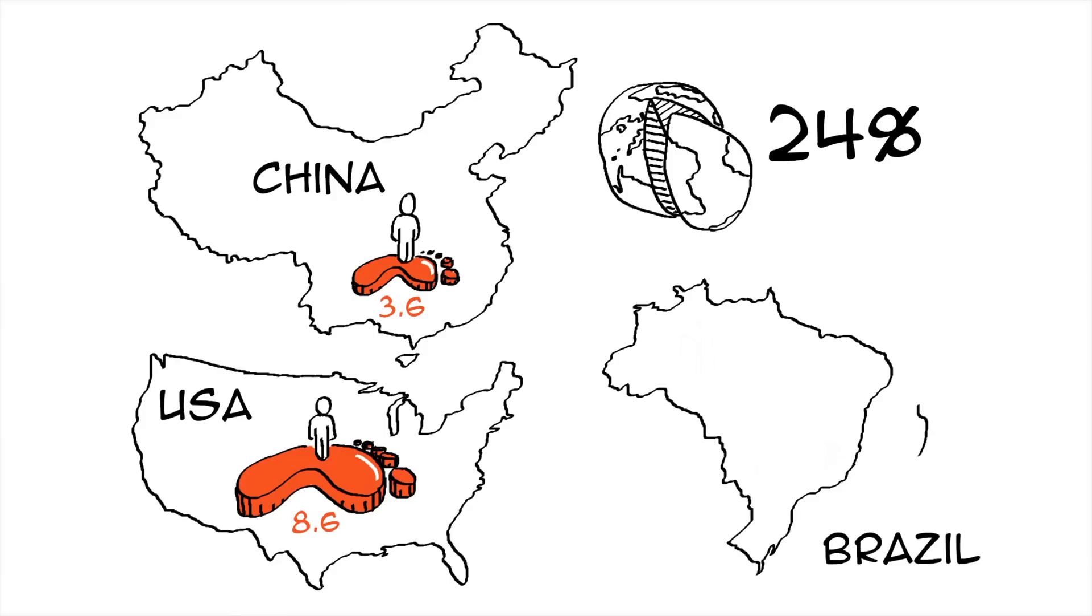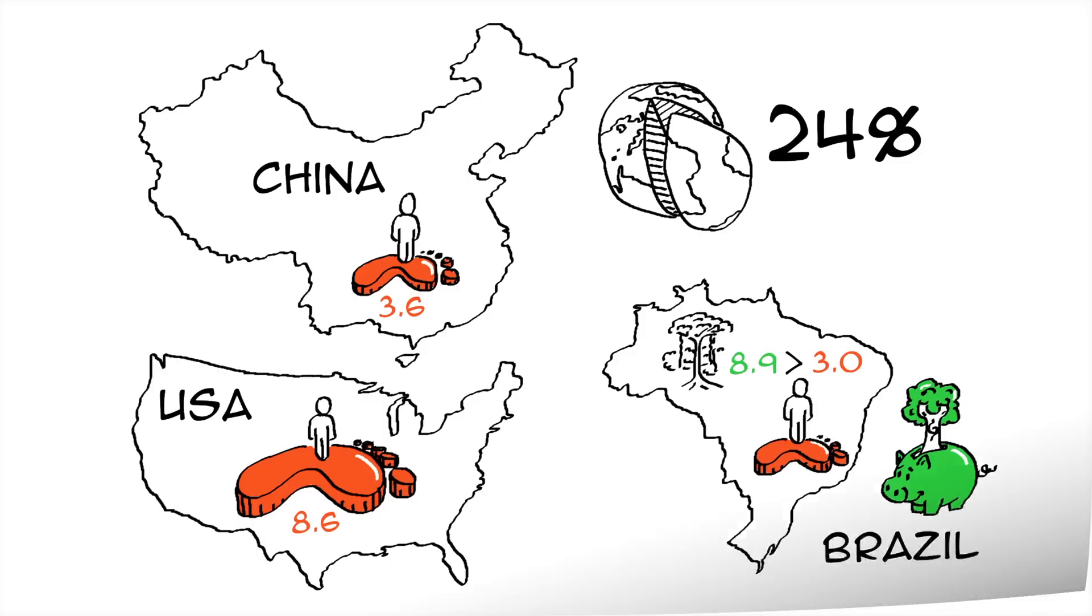Brazil, meanwhile, has an ecological reserve thanks to its immense forests. Brazil has a bio-capacity per person of nearly 8.9 global hectares and a footprint per person of 3 global hectares.